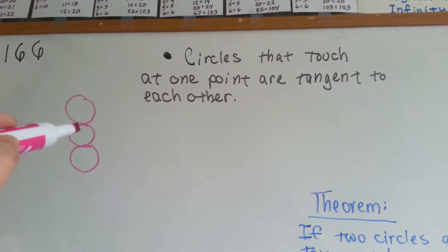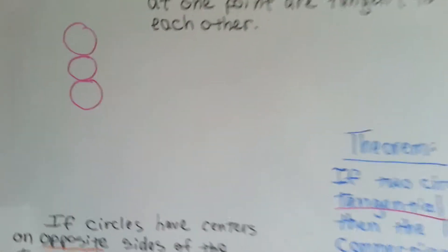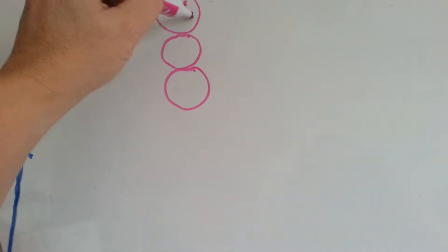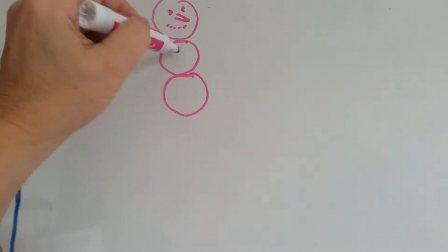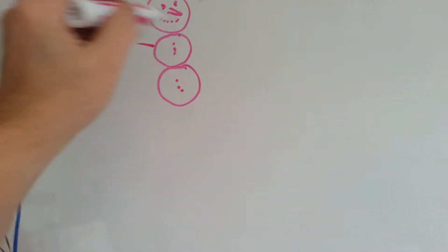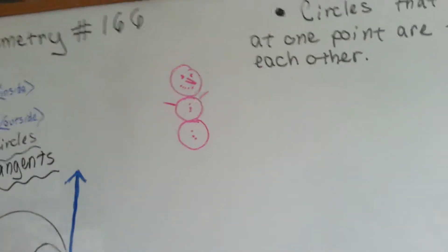Circles that touch at one point are tangent to each other. You know what this looks like? Like a snowman. His circles are tangent to each other.